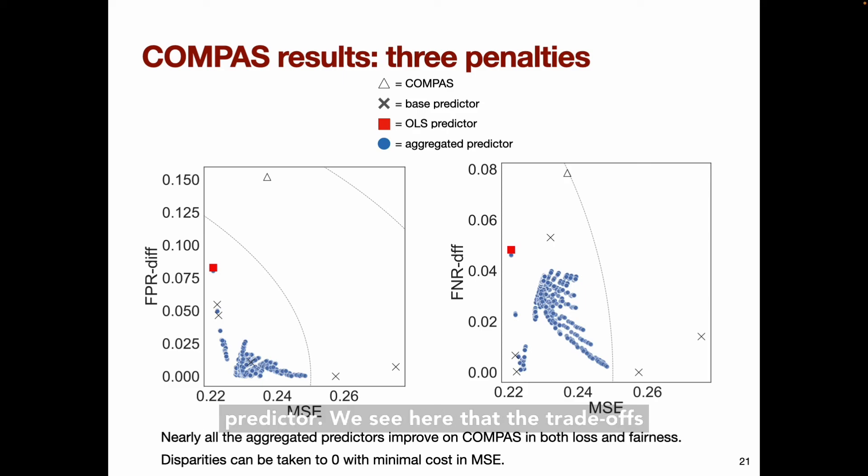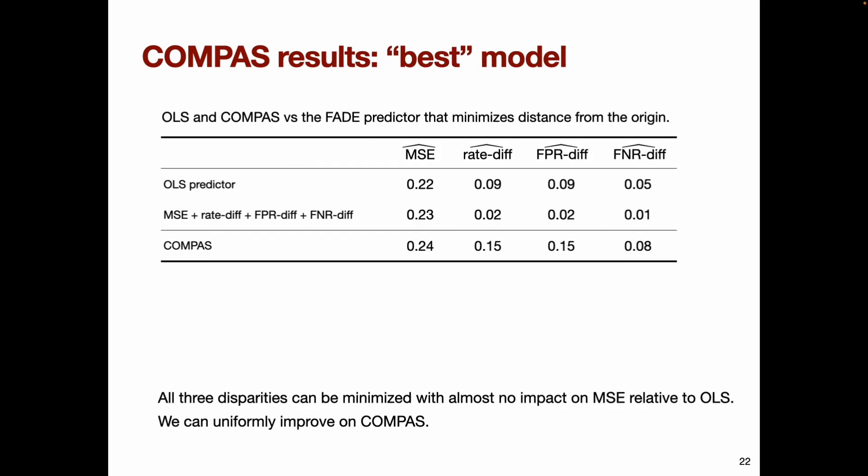We see here that the trade-offs also look different for different unfairness measures. So this approach provides a principled way to explore these trade-offs in any given problem setting. Now what about fairness-fairness trade-offs? It turns out here that we can effectively jointly minimize all three unfairness measures simultaneously.